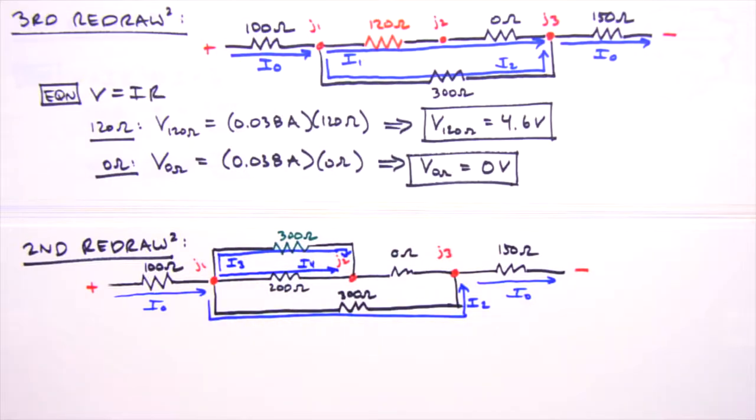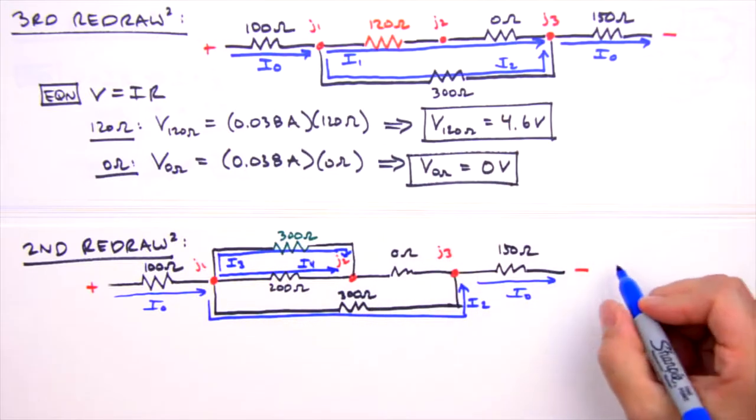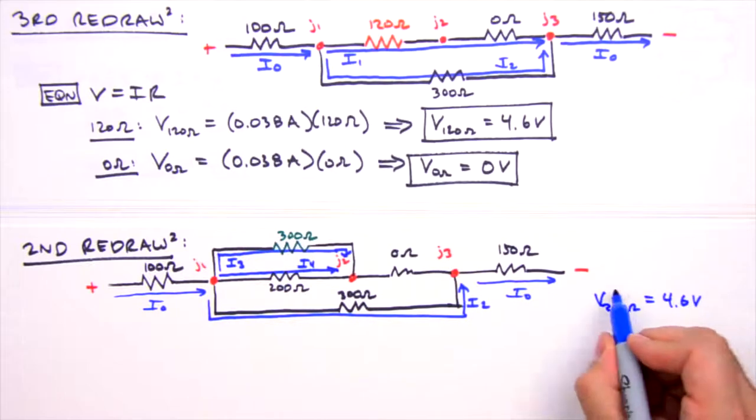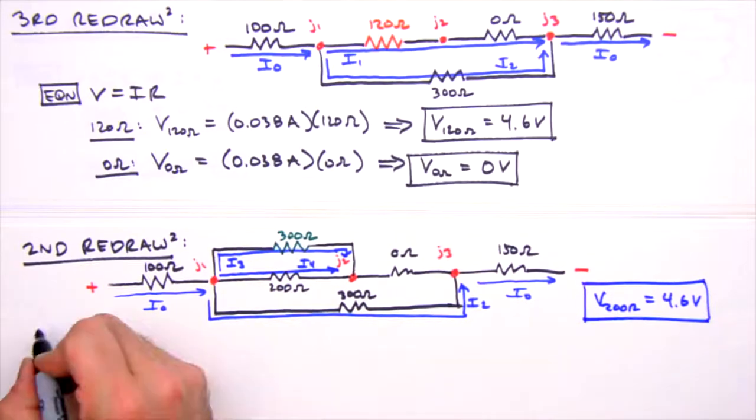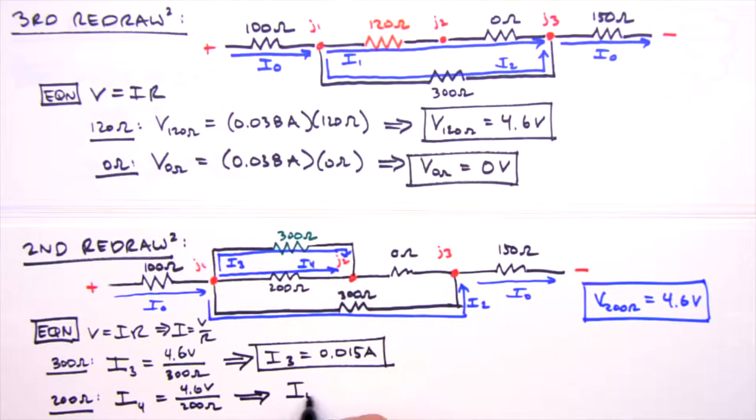To get values for I3 and I4, we'll use, you guessed it, Ohm's law. We need voltages first, but because they're in parallel, they have identical voltages to the resistor representing their equivalent resistance. That's 4.6 volts. We'll box that up for the 200 ohm resistor. And we determine current values using this voltage. So I3 is 0.015 amps, and I4 is 0.023 amps.